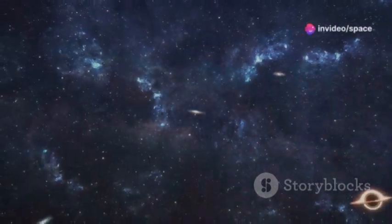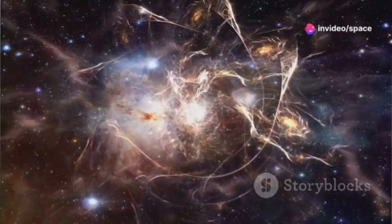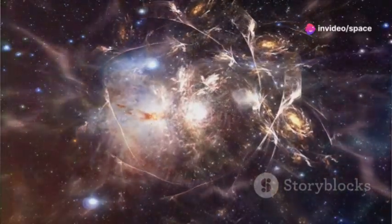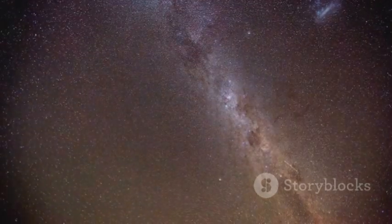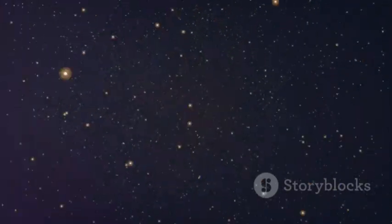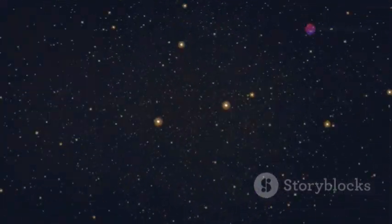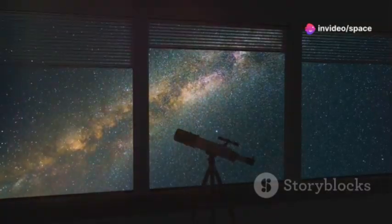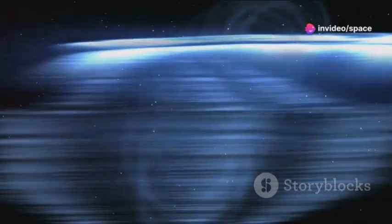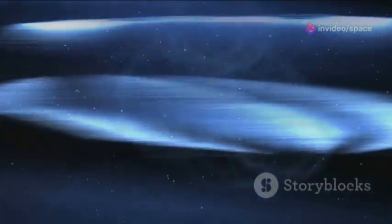Imagine a sphere with earth at its center. This sphere represents everything we can currently observe in the universe. The radius of this sphere is about 46.5 billion light-years. That's a really long way, but here's the catch. The observable universe isn't the entire universe, it's just the part we can see. Light from objects beyond this sphere hasn't had enough time to reach us since the Big Bang.